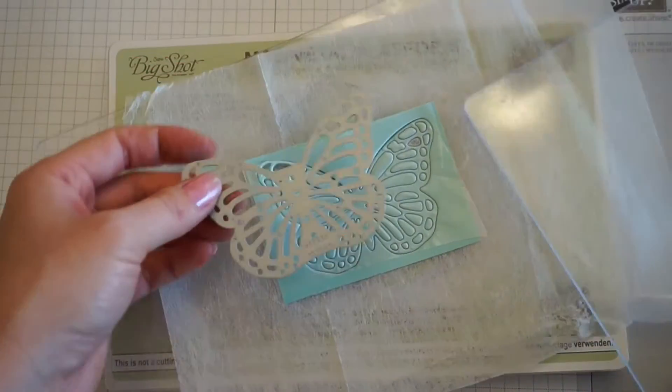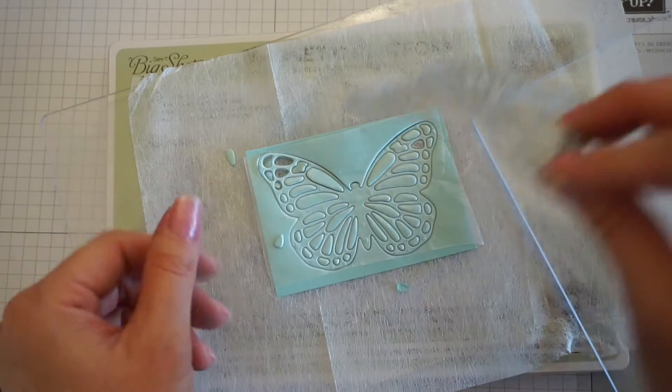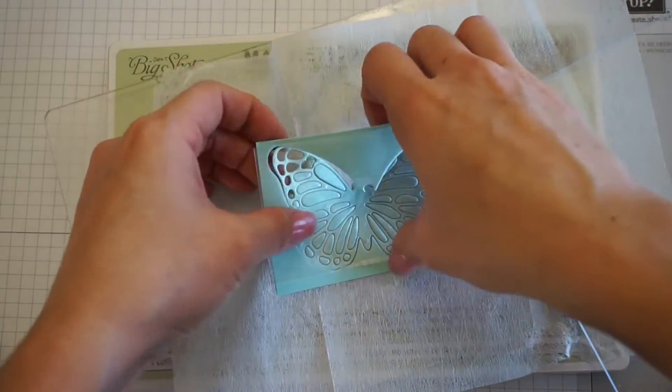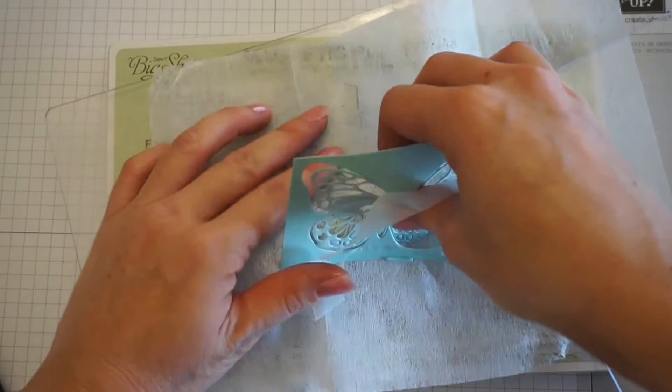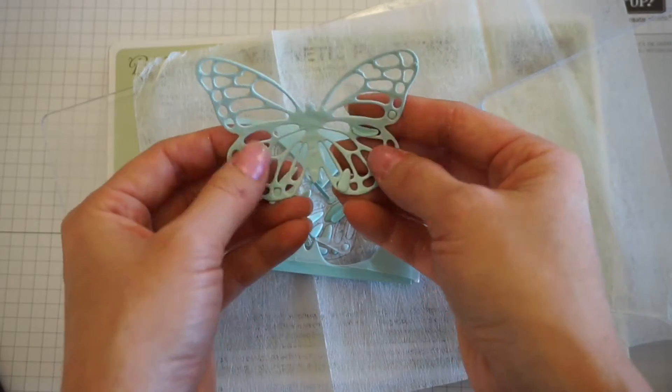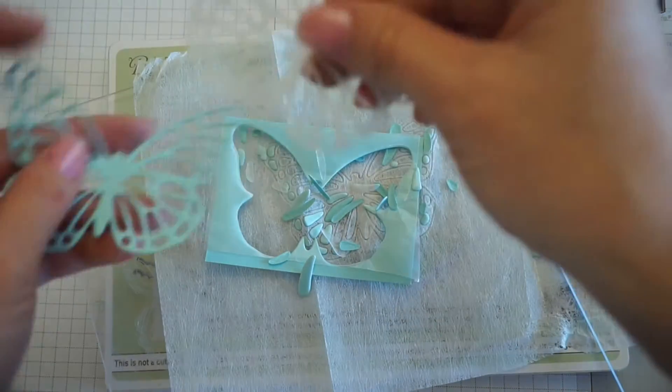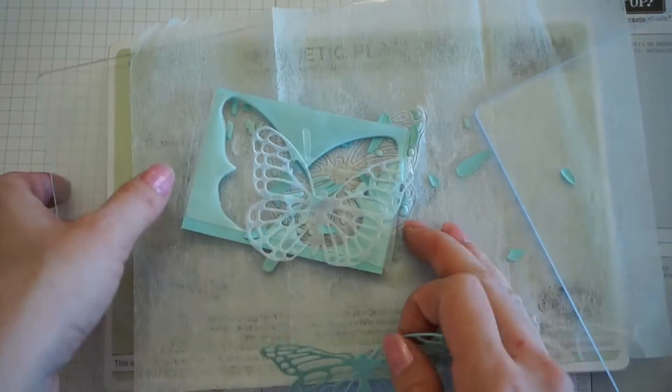From there you'll get the butterfly. The die just comes off really easily. You can punch out the extra pieces. The wax paper just helps the little pieces come out easier. You need to take off the wax paper cutout of the butterfly as well.